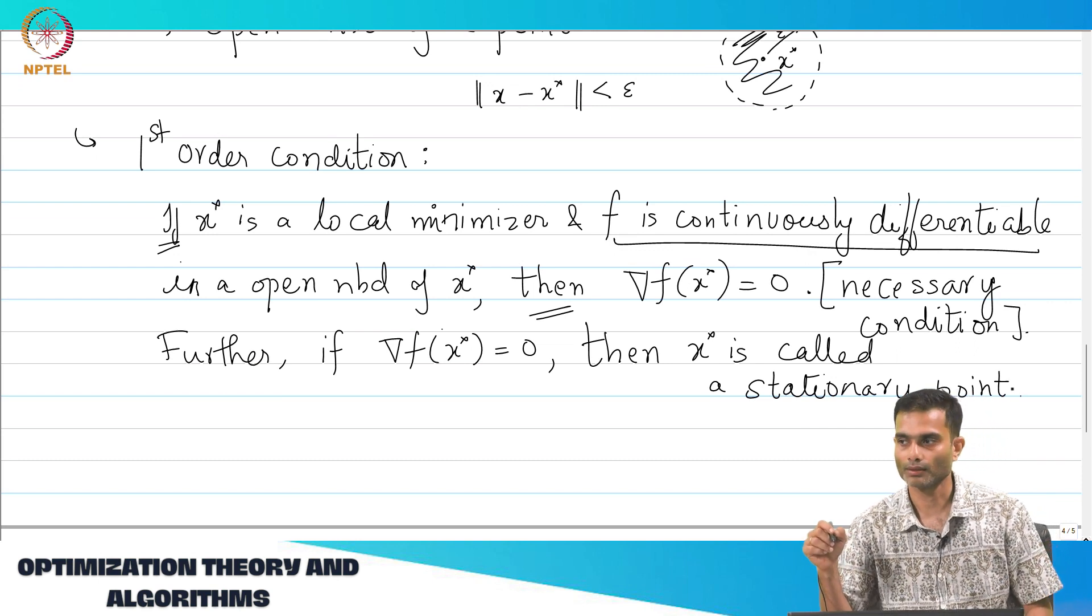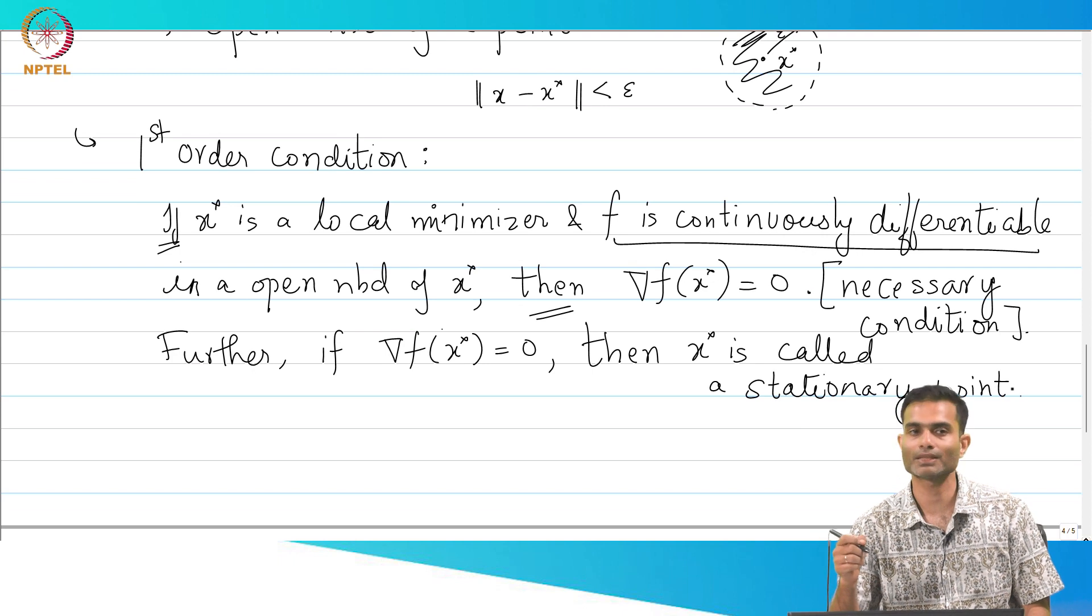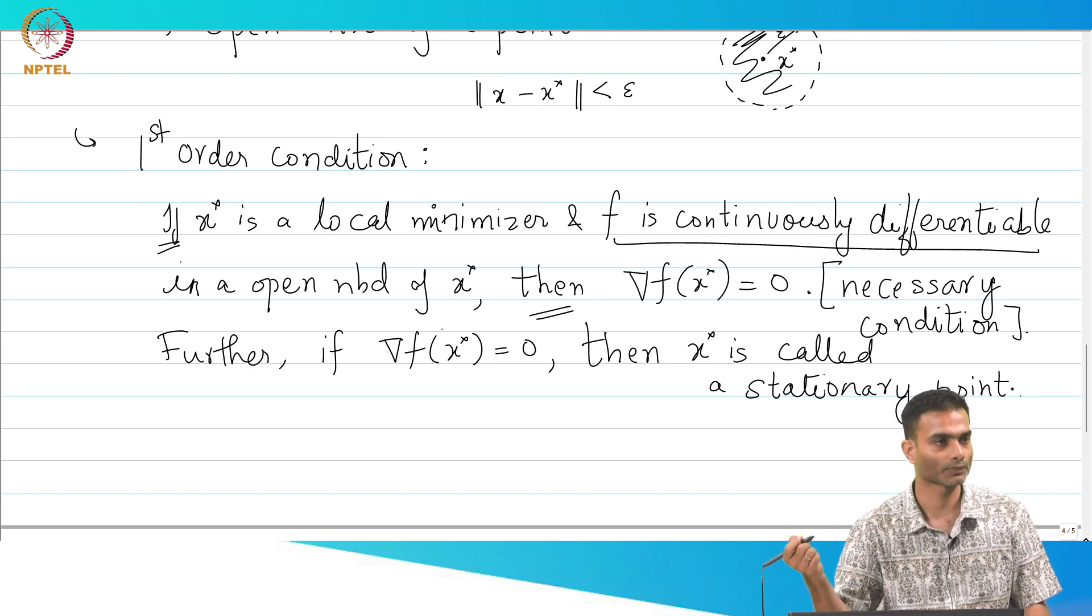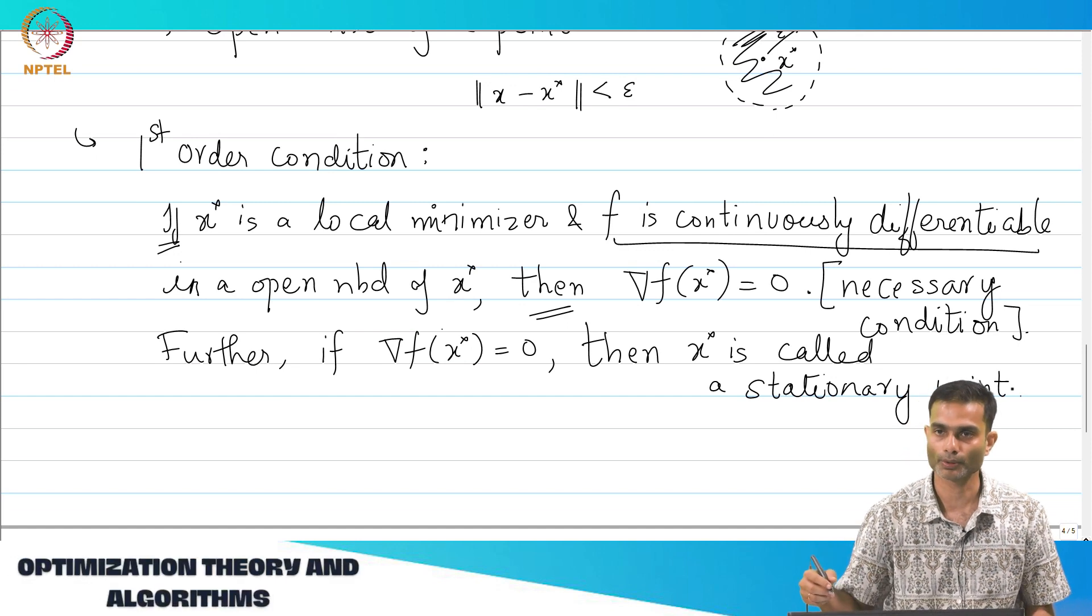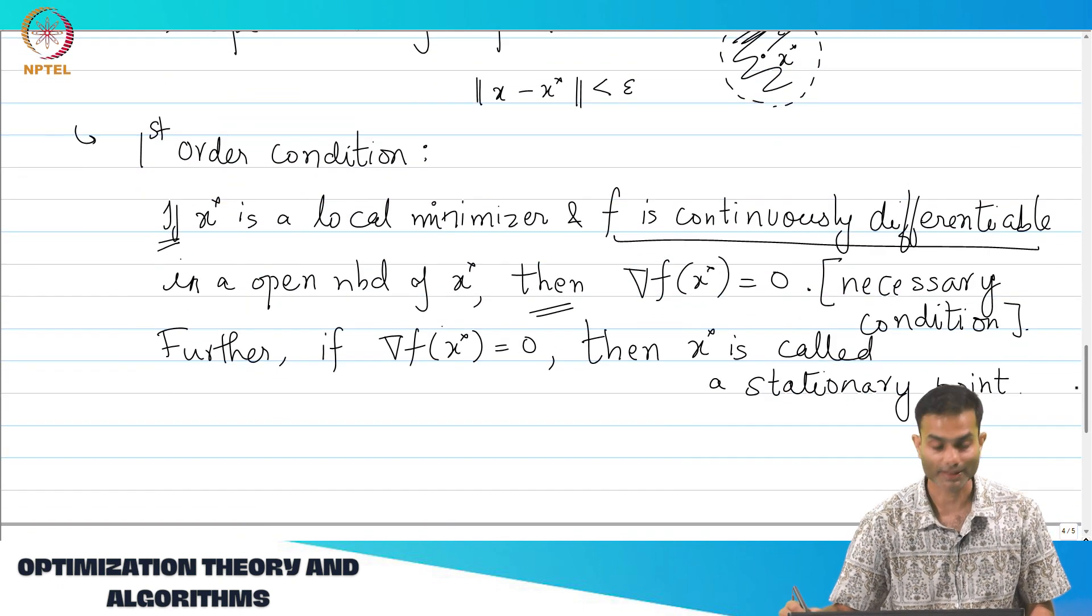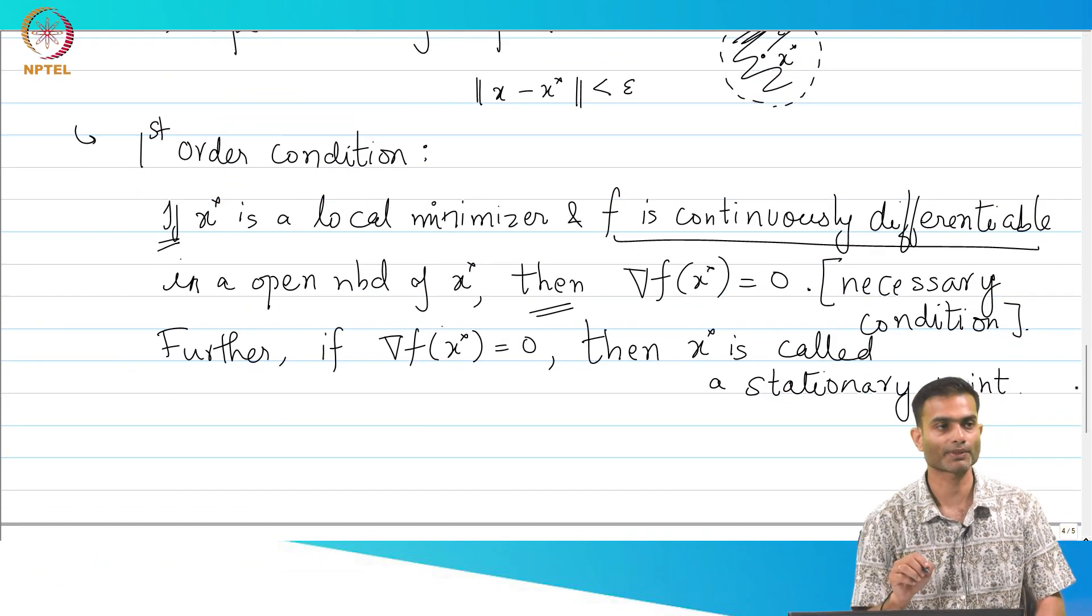We will prove this, proof is quite simple and gives us insight, it will give us actually insight into our first algorithm. So, I will, we will go into the proof. Before we go into the proof, I want to write down the second order condition. Any questions about this?